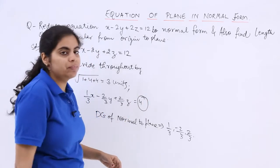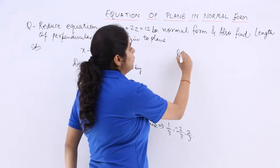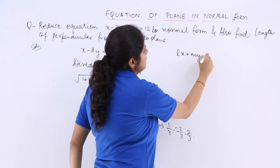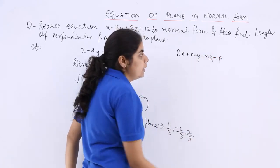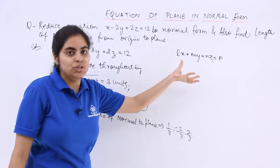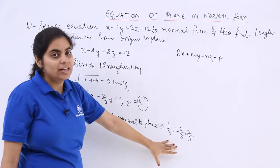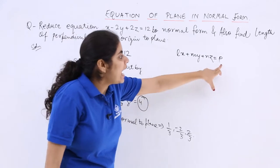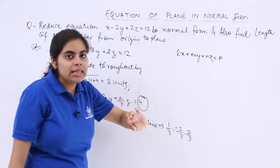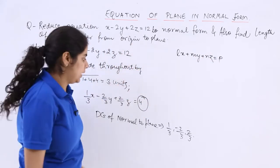So this actually is a form of Lx plus My plus Nz equals P, which we studied in the video discussing the Cartesian equation, and we said that L, M, N are the direction cosines of the normal to the plane, and this P is the length of the perpendicular from the origin to the plane.